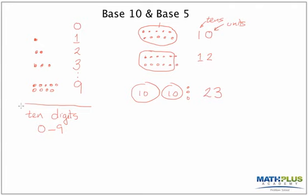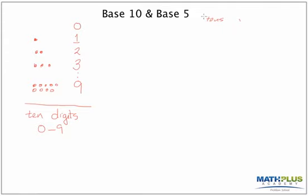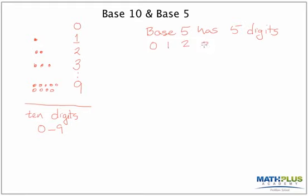Now, if I try to do the same thing in base five, what would that even mean? What is base five? Base five is a system where I'm only allowed to have five digits. Think of this as an alternate universe where I'm only allowed to use the digits zero, one, two, three, and four. It's as if the digits five, six, seven, eight, and nine do not exist.